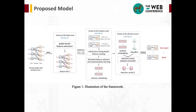At the decision level, we propose an attention-based adaptive ensemble model to leverage the advantages of different classifiers. As shown in Figure 1, the proposed framework IFSPART consists of three stages: processing at the data level, at the feature level, and at the decision level.